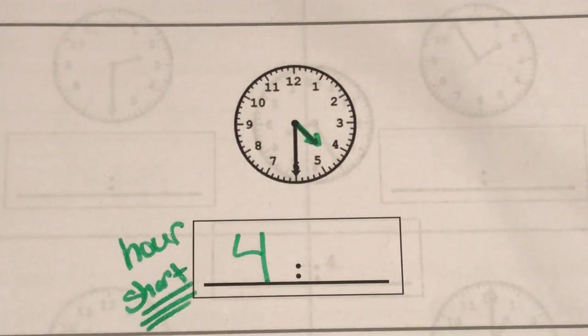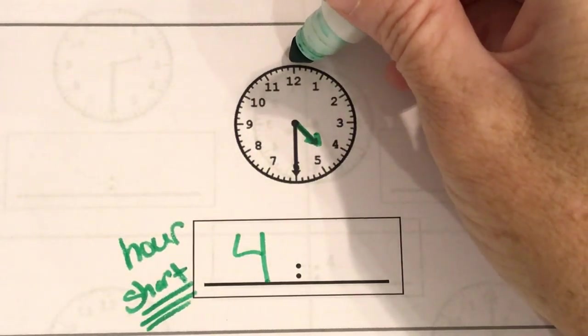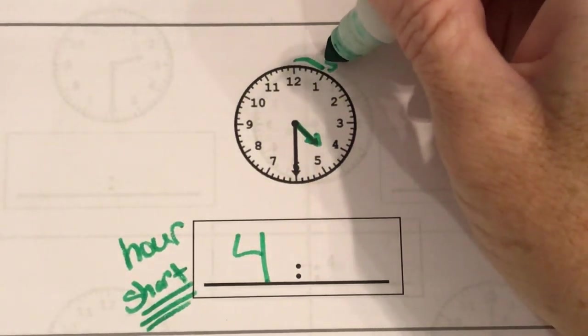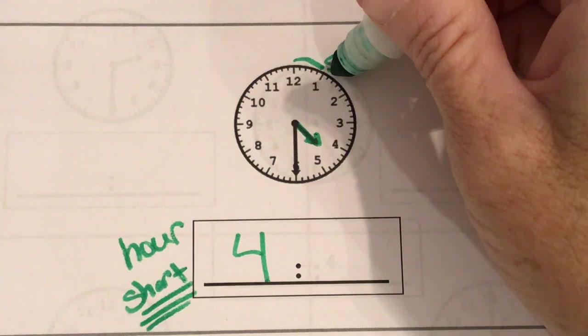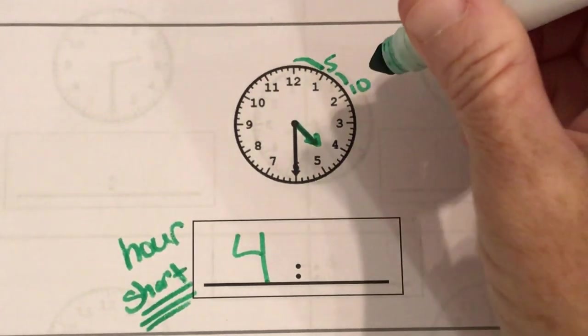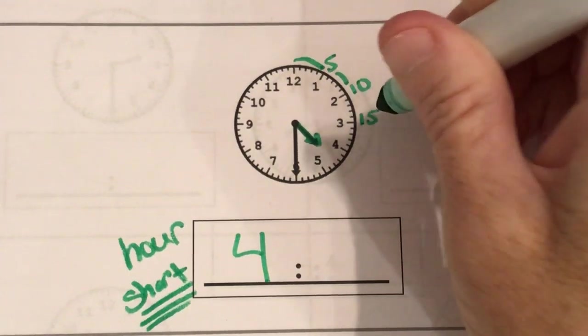So now when we do the minute hand we always start on the top and we count and there's five little tallies and then let's skip count by fives to make it faster. That would be 10, 15.